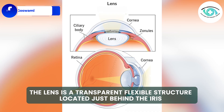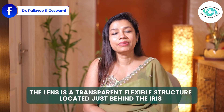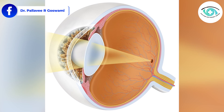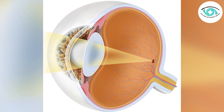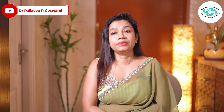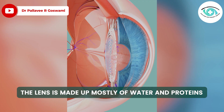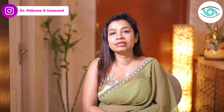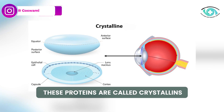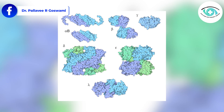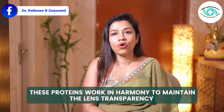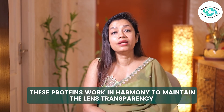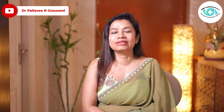The lens of the eye is a transparent, flexible structure located just behind the iris. It helps focus light onto the retina, allowing us to see clearly. The lens is made up mostly of water and proteins arranged in a very specific and organized pattern. These proteins, called crystallins, are responsible for keeping the lens clear — like a team working in harmony to maintain transparency.